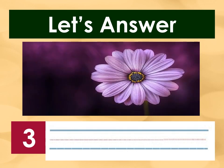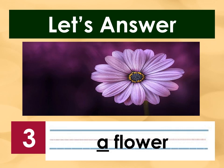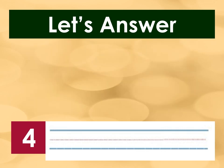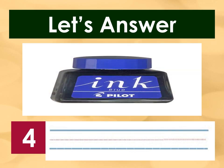Number 3. That's correct! It's A. Flower starts with a consonant letter F. We use the article A when the word after it starts with a consonant letter. Number 4. That's correct! It's AN. Ink starts with a vowel letter I. We use the article AN when the word after it starts with a vowel letter.